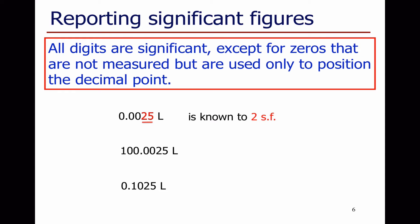A number known to two significant figures can also appear differently. With another example, we know that the 1 is significant and the 5 has been measured, but we don't know anything beyond the 5. All digits across that number — all seven of them — are significant, and this one is known to seven significant figures. In the last example, the leading zero is only there to position the decimal place, giving us four significant figures.